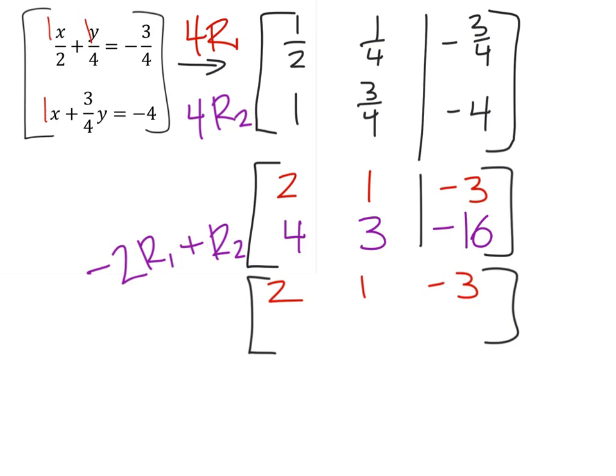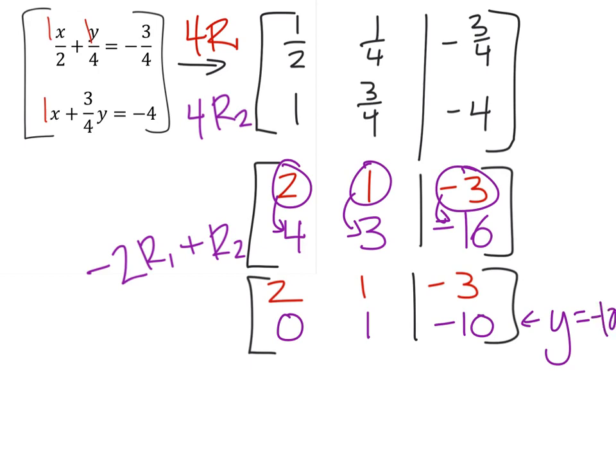Notice in this new matrix, we still have the top row, which stays the same, but if I take negative two times row one in this first column, that would give me negative four. Then I'll add that to this four, which is now zero. In the second column, negative two times one is negative two, and if I add that to three, I get one. And that actually is where we want that one anyways. Likewise with the answers, negative two times negative three is a positive six plus the negative 16. That would give me a negative 10. Right away, this second row tells me that y is negative 10 because we've eliminated the x.